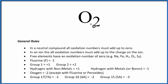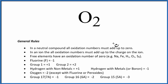For O2, oxygen gas, this is a special case. When you have only one type of element — like Na, Fe, or H2 — the oxidation number for the whole compound is zero. That's pretty much it for this one.